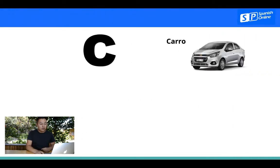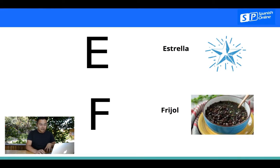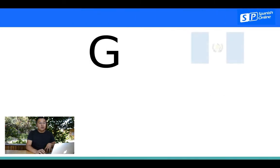C, carro. La D, dado. La E, de estrella. La F, de frijol, beans. La G, de Guatemala.